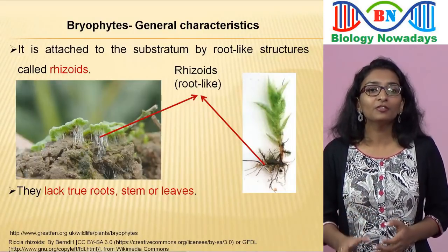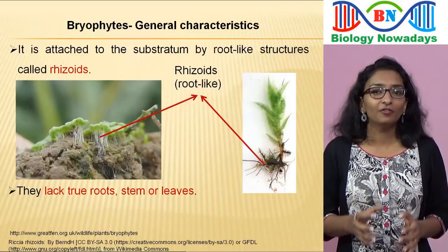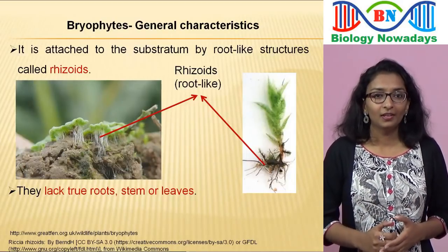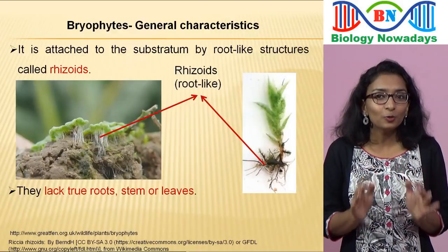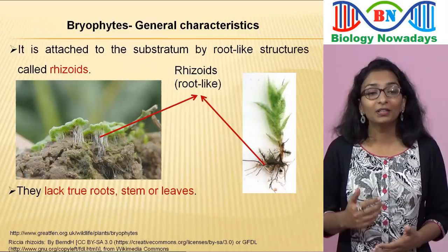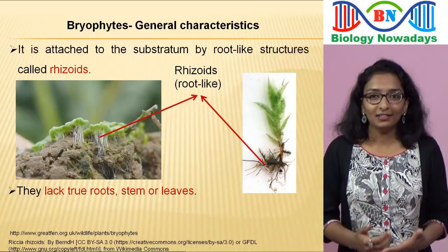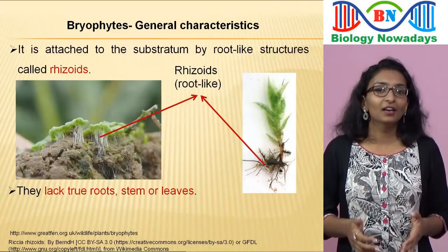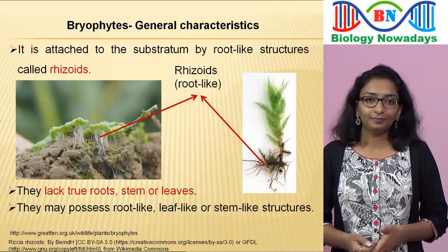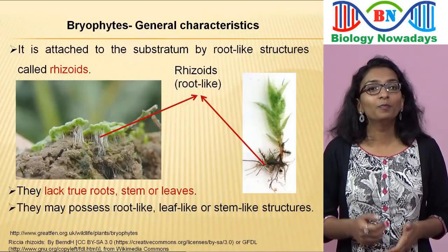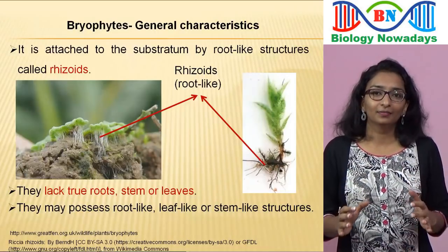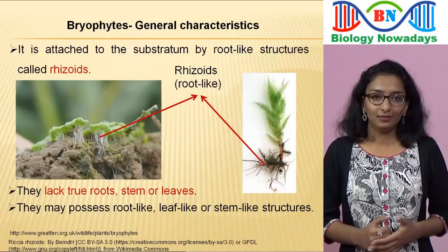Some members of bryophytes have a kind of specialized tissue for water and food transport, but these tissues are not as specialized or advanced as xylem and phloem. Because of this, we can say that bryophytes may possess root-like, leaf-like or stem-like structures. Also, most of the leaf-like structures of the bryophytes are very thin, mostly one-cell thick.